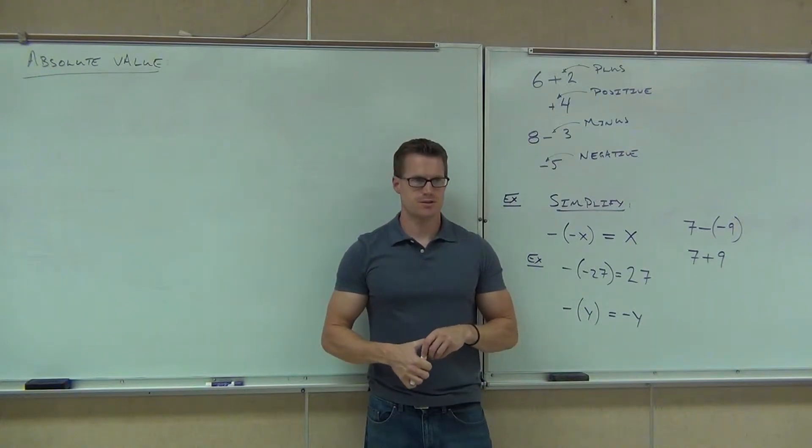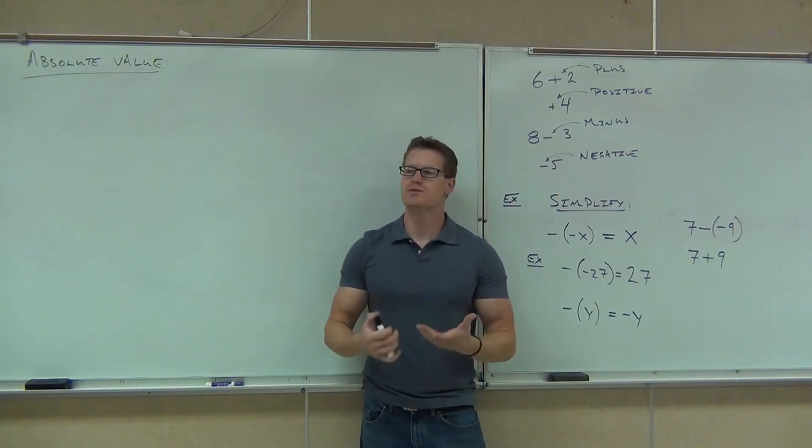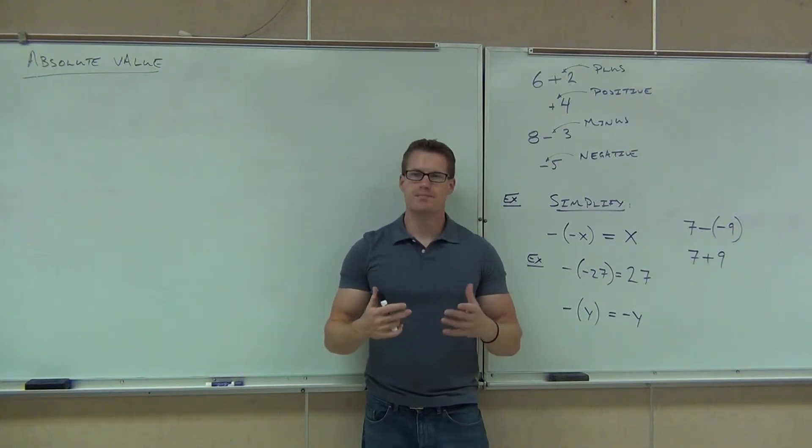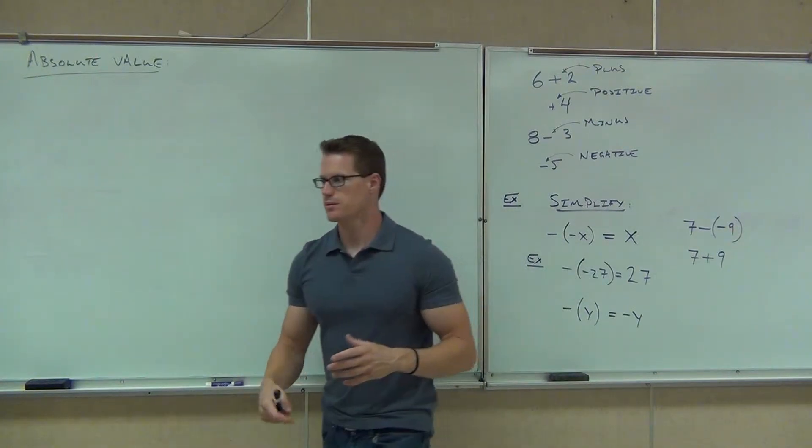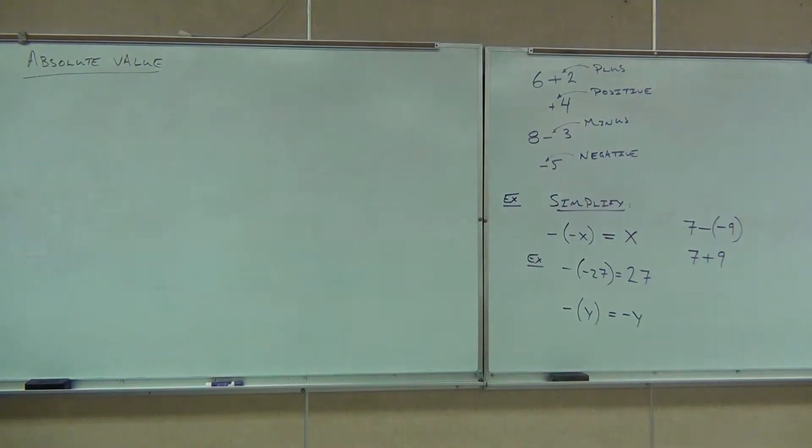Here's what the absolute value does. The absolute value of a number is a way to measure the distance that a number is from zero. So the absolute value is really just the distance a number is from zero.